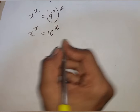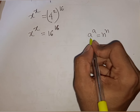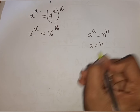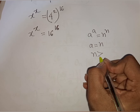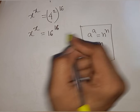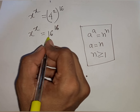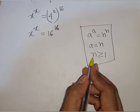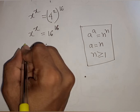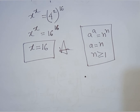Here we can apply the rule that if a power x equals a power n, then a equals n, where n is greater than or equal to 1. So here x will be equal to 16 according to this rule. Therefore x is equal to 16. This is the value of x, so this is our final answer.